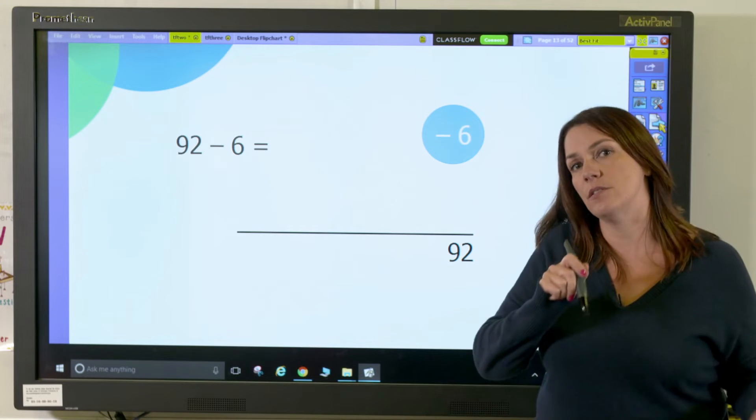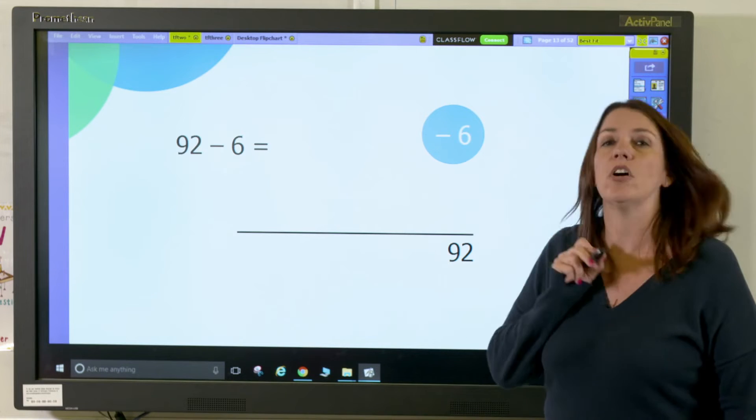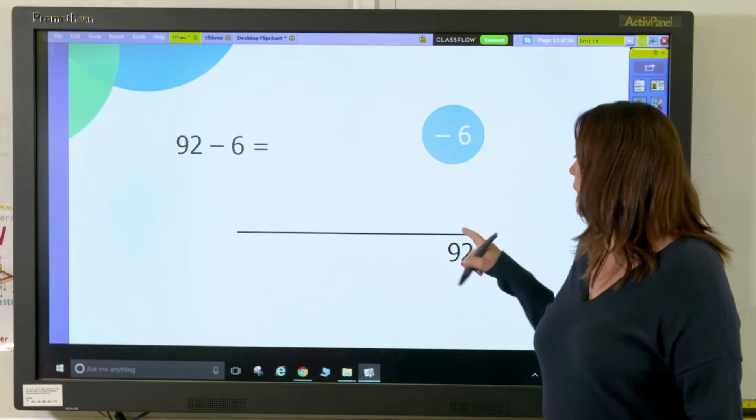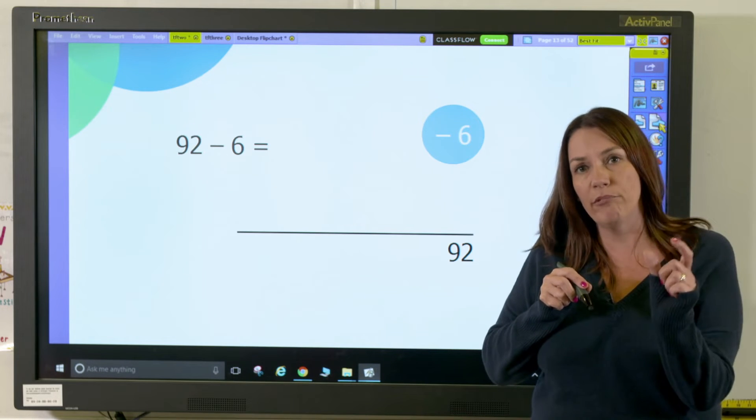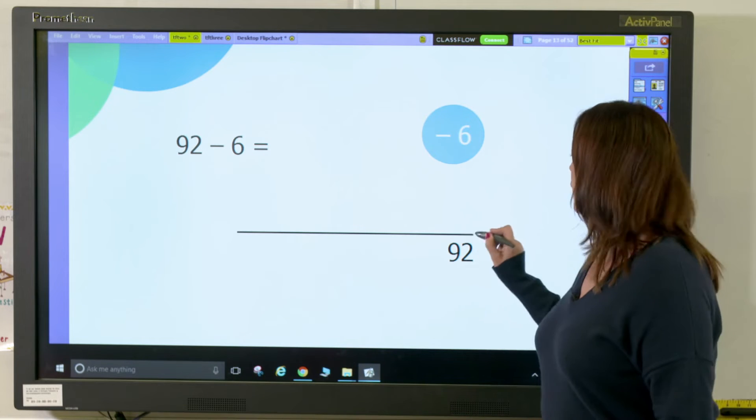We can also use this to do subtraction. Here I have 92 take away 6. I know that if I jump back and take away 2, it will take me to my bridge, my stepping stone of 90.